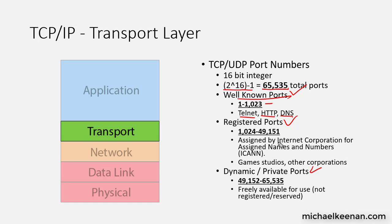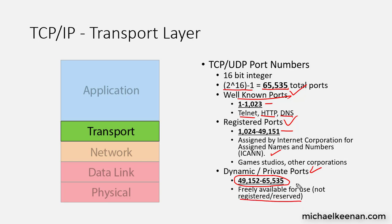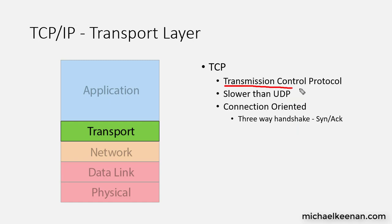Registered ports are assigned by the Internet Corporation for Assigned Names and Numbers, otherwise known as ICANN. Those ports are used by game studio developers and other corporations — like Blizzard, EA, and Microsoft — which have their own proprietary ports in that range. The last category is dynamic and private ports. Anyone can use these ports; they're freely available for public use and are not registered, not reserved, and not well-known.